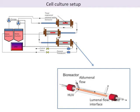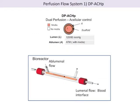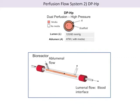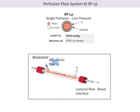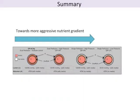Decellularized ex vivo tissue samples were seeded with myofibroblasts and cultured for a period of four weeks. Three different culture conditions using single perfusion, one nutrient source, or dual perfusion bioreactor systems with two nutrient sources were designed to assess the effect of pressure and nutrient gradients under either low pressure or high relative pressure conditions.